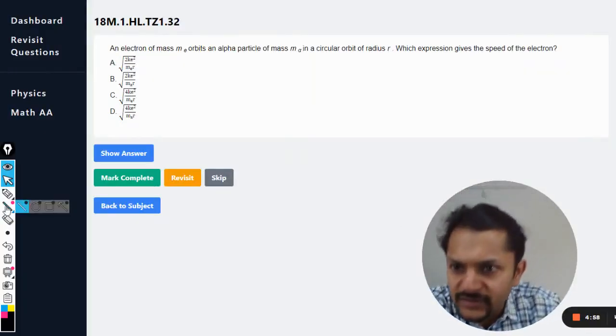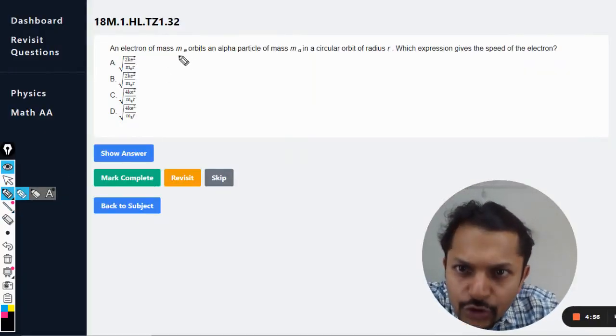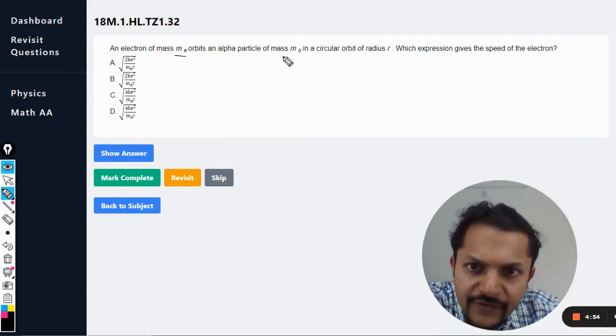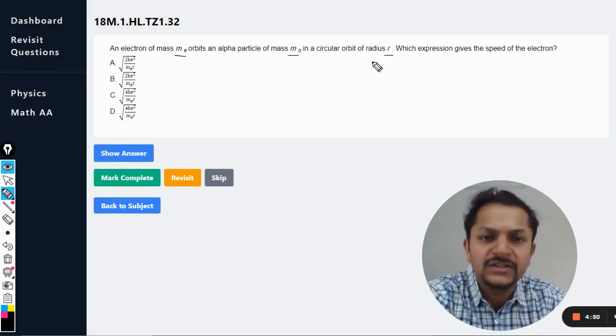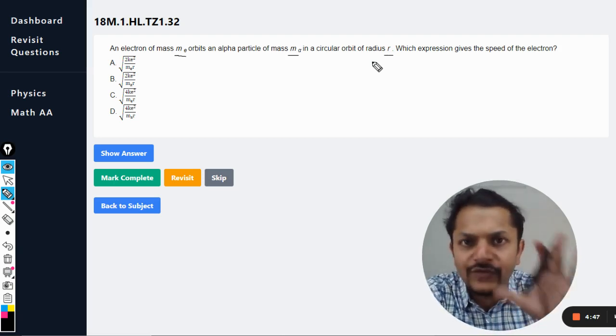Okay dear students, let us see what is there in this question. An electron of mass me orbits around an alpha particle of mass m alpha in a circular orbit of radius r. Which expression gives the speed of the electron?